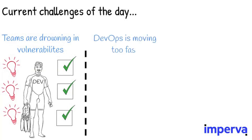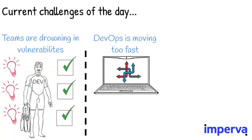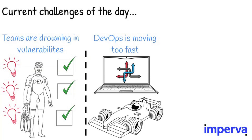Next, we know that DevOps is moving too fast. CISOs and their teams lack visibility into these applications as well as control, while DevOps continues to move at breakneck speeds.